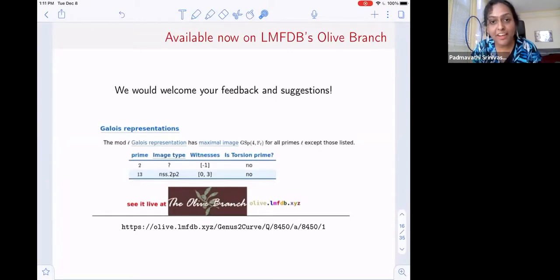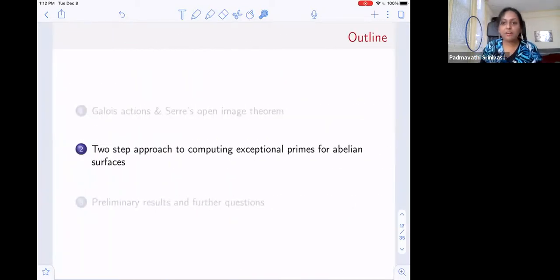Our code is now available on LMFDB's olive branch. For example, if you take this curve with LMFDB label 8450.a.8450.1, the only non-surjective primes here are 2 and 13. Every other prime which is not 2 or 13, rho_A,L is surjective. Our code can actually tell you a little more extra information. We are still documenting exactly what we mean by image type and so on. Hopefully this will be up soon. But we very much welcome any feedback you have to offer or any suggestions for features you'd like to see from such a code. Please let us know.